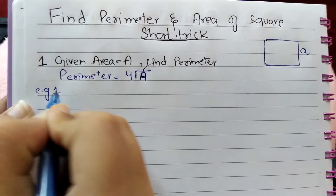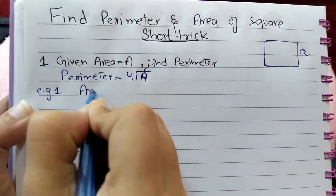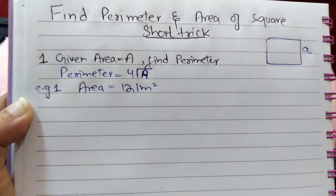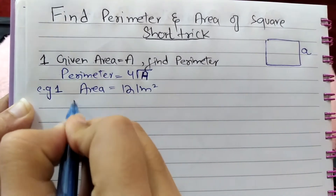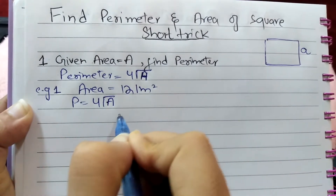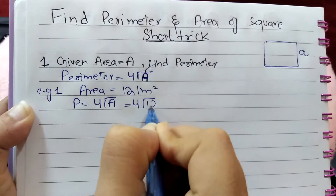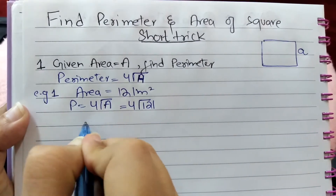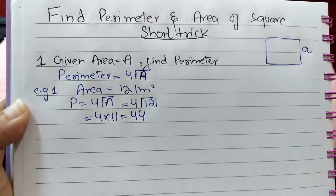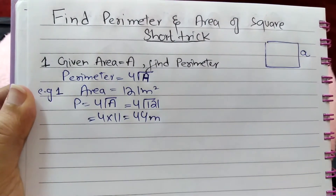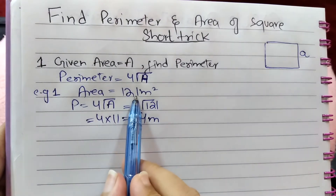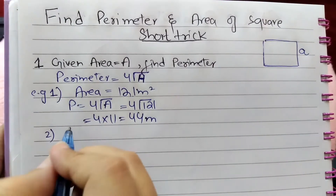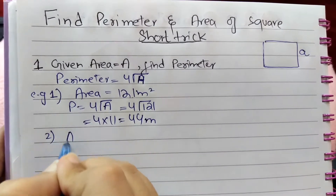For example, if area is 121 meter square, find perimeter. Perimeter is given as four times the square root of 'a', which will be equal to four times the square root of 121. Since the square root of 121 is 11, so 4 into 11 equals 44. Therefore, 44 meters is the perimeter of a square having area 121 meter square.